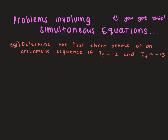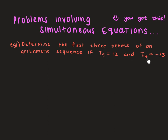Let's have a look at our first example. Determine the first three terms of an arithmetic sequence if term 5 — that's why I wrote t5 — is equal to 12, and term 14 is equal to negative 33.